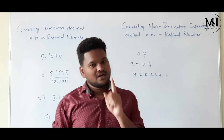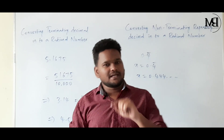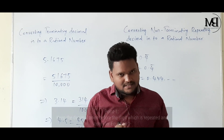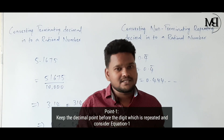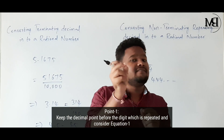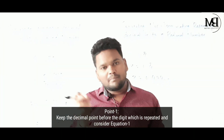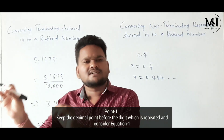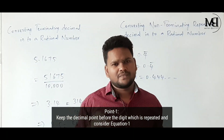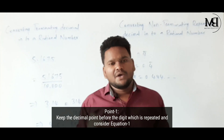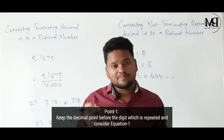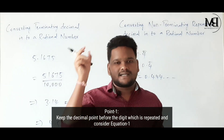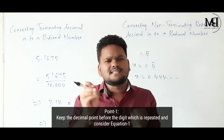Please listen carefully. Point number 1: we have to keep the decimal point before the digit which is repeated, and then consider it as equation 1.